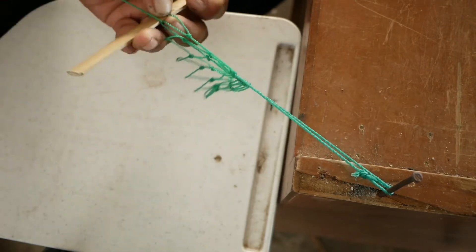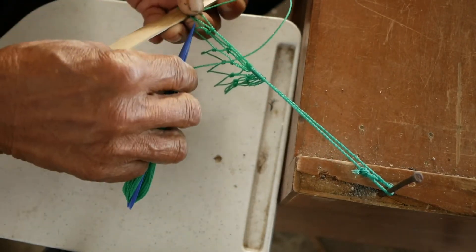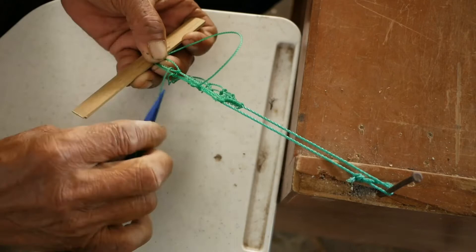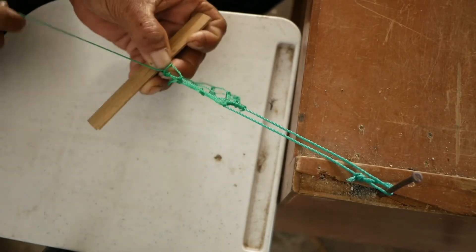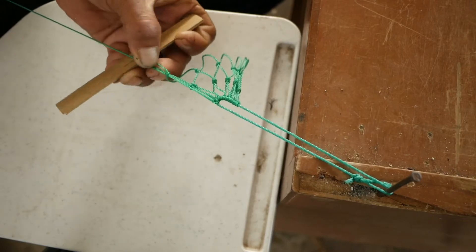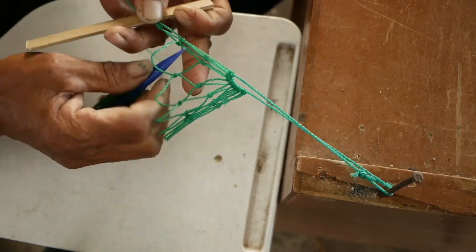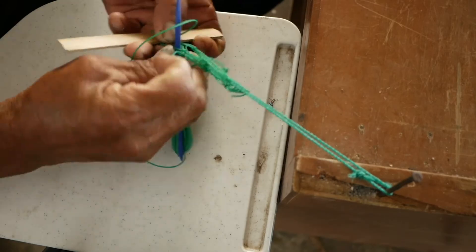If you have mastered sheet bend to create knots in your fishing net, the double sheet bend should be easier to achieve. Just follow the extra step shown here and you will be finished in no time. Repeat each knot to about 60 times more and you will have your finished hand-weaved fishing net.